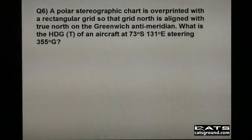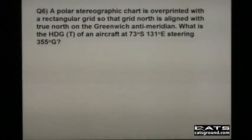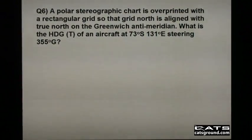In this question, a polar stereographic chart is overprinted with a rectangular grid so that grid north is aligned with true north on the Greenwich anti-meridian. What is the heading true of an aircraft at 73° south, 131° east, steering 355° grid?